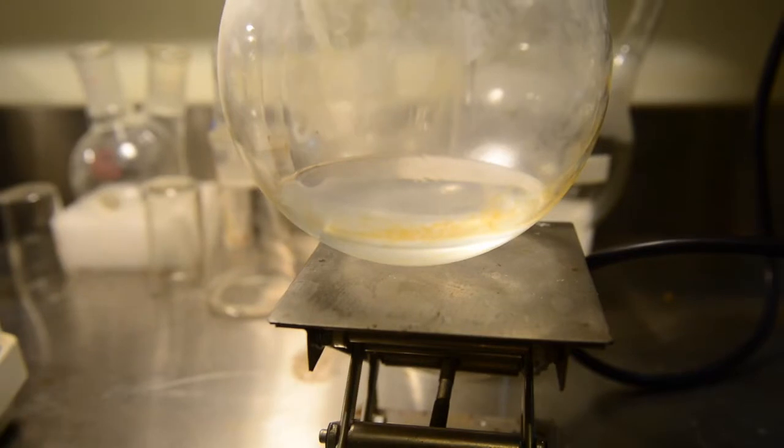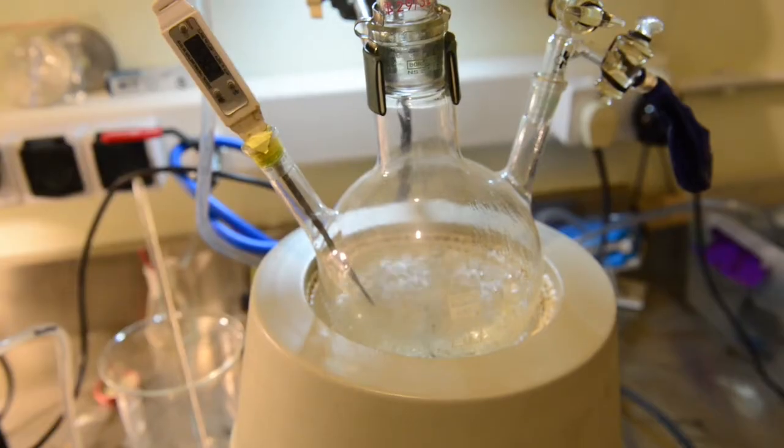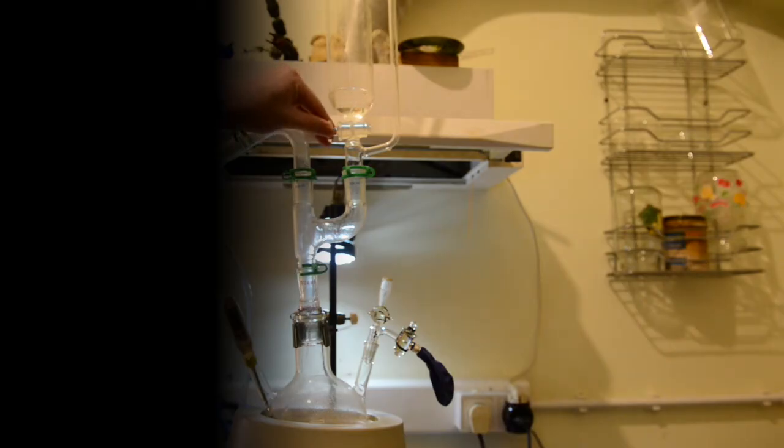In the receiving flask cloudy distillate is collected. Heating was continued until all the formic acid had reacted. After that, we had turned off the heating mantle and cooled the reaction flask down almost to room temperature.